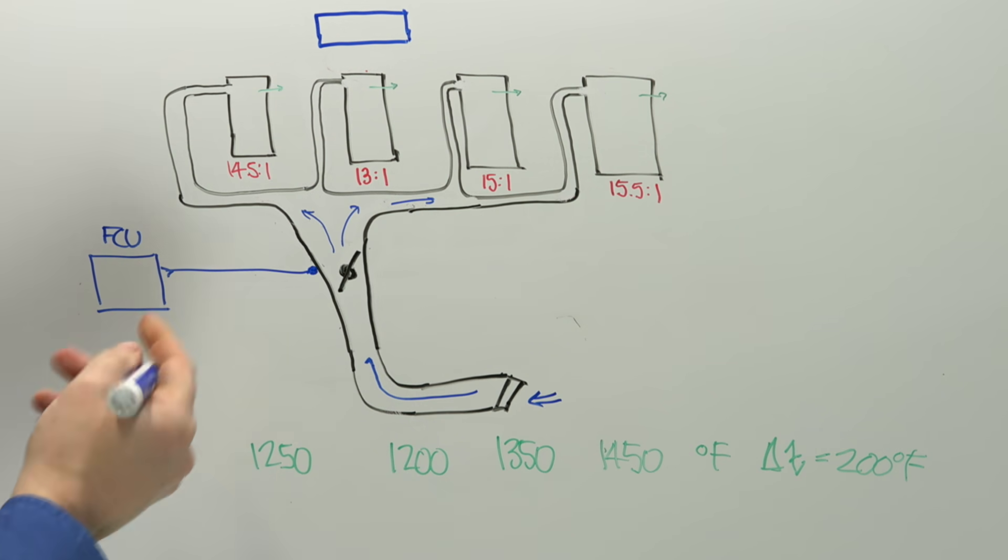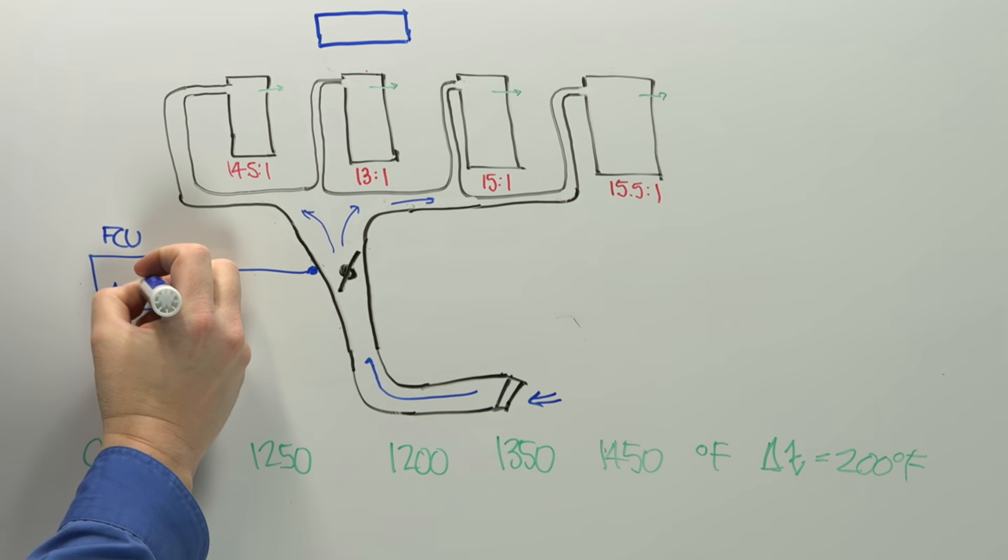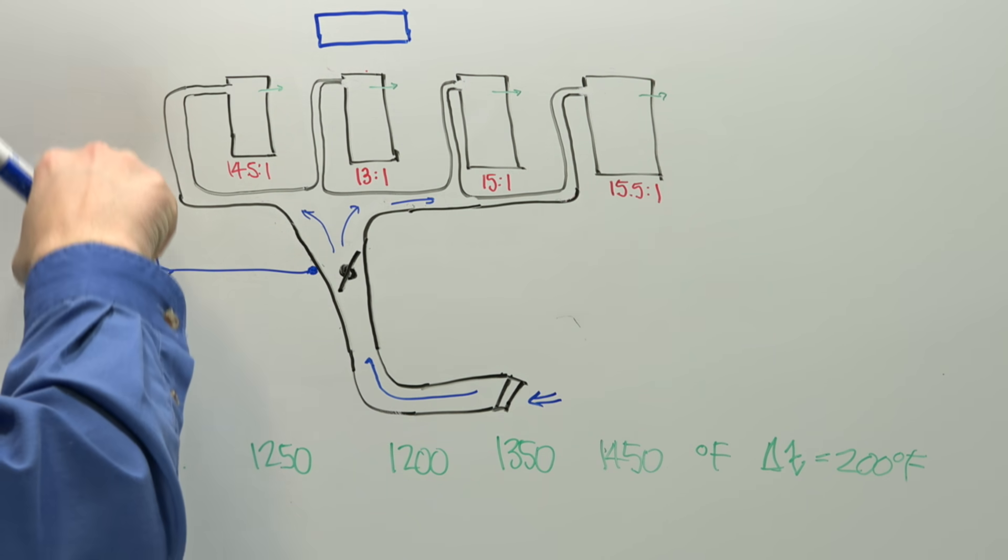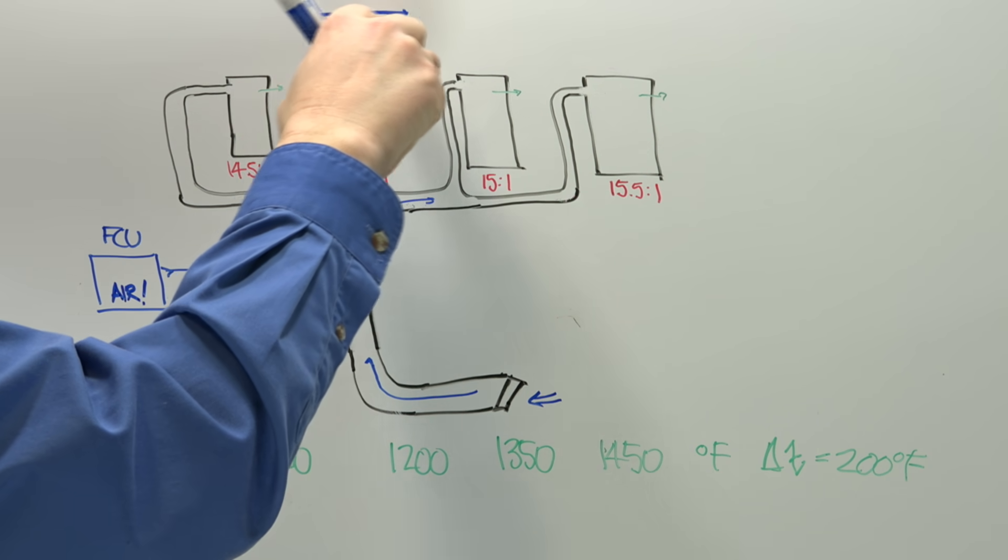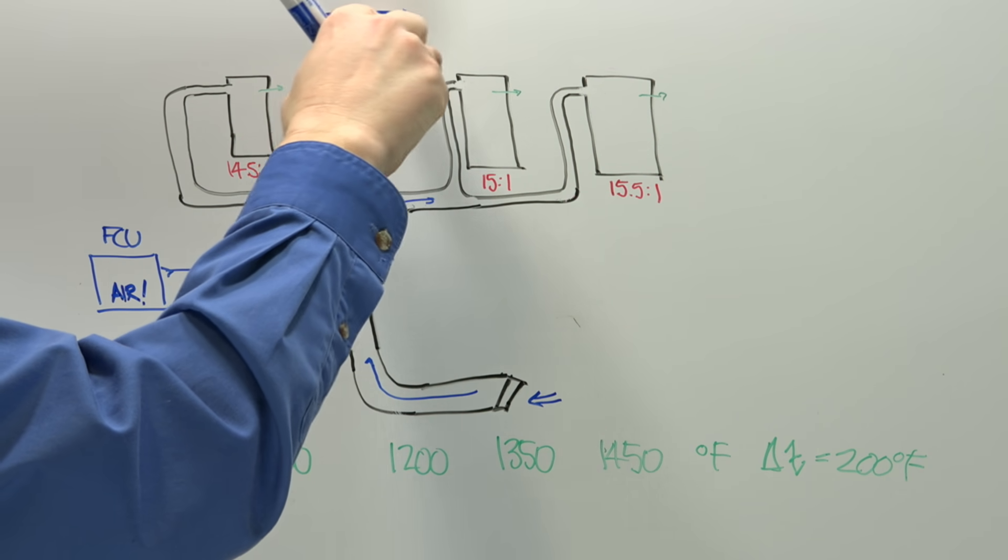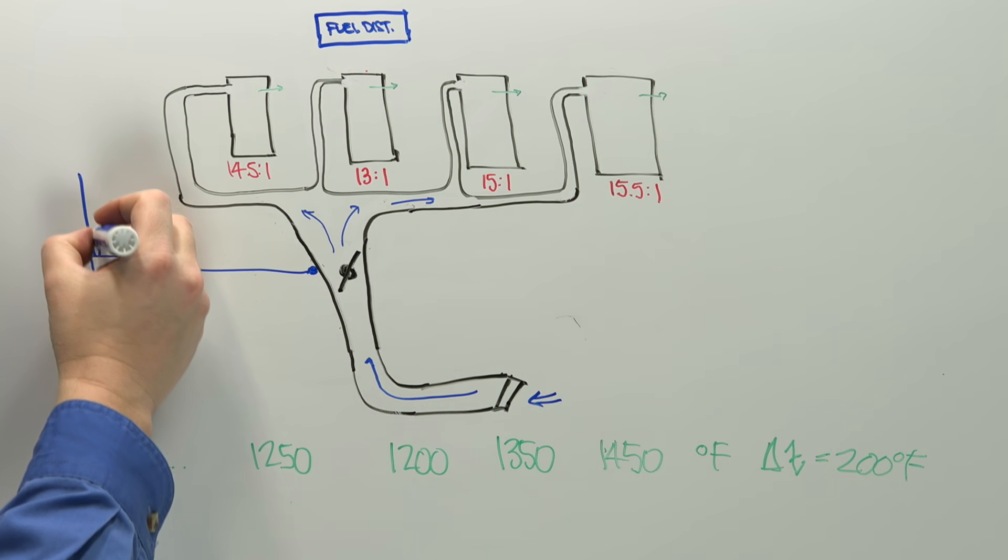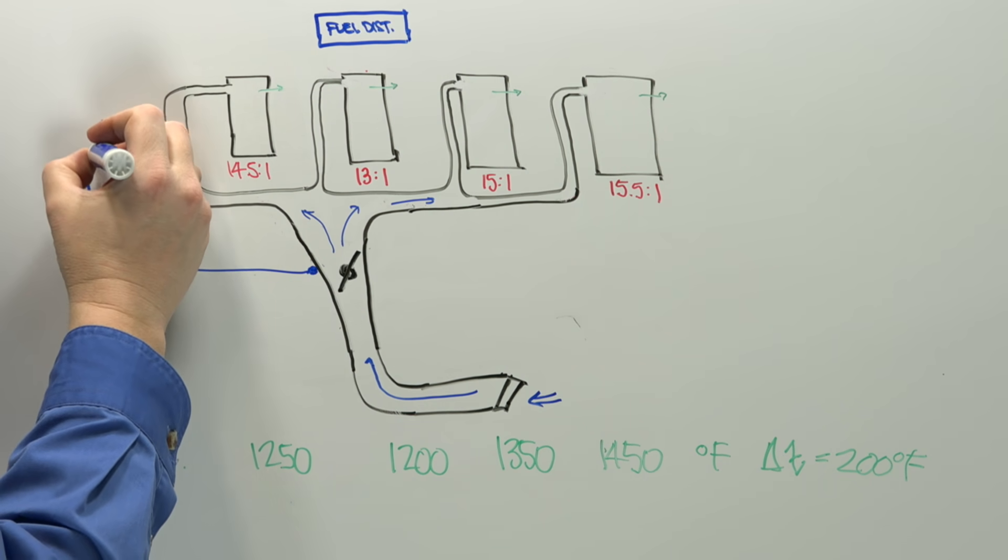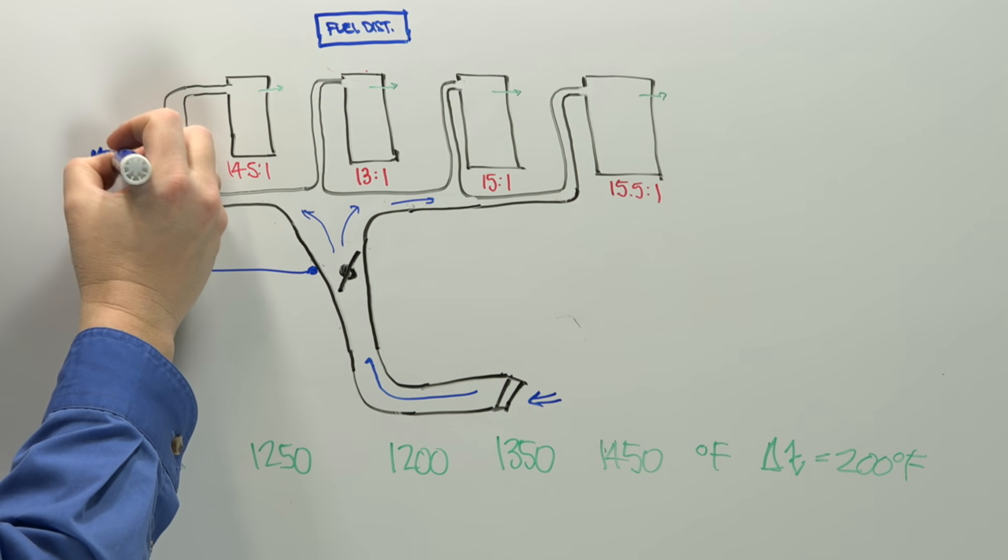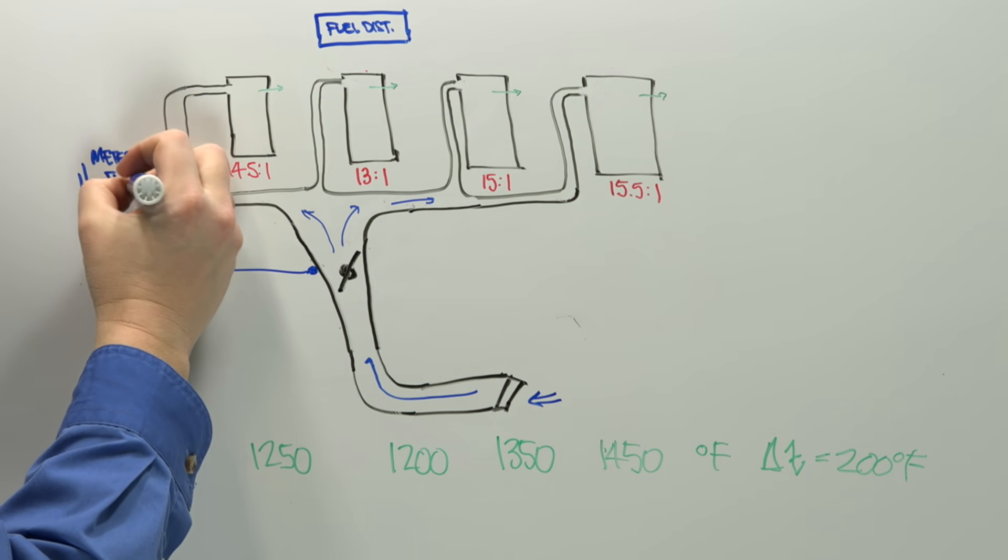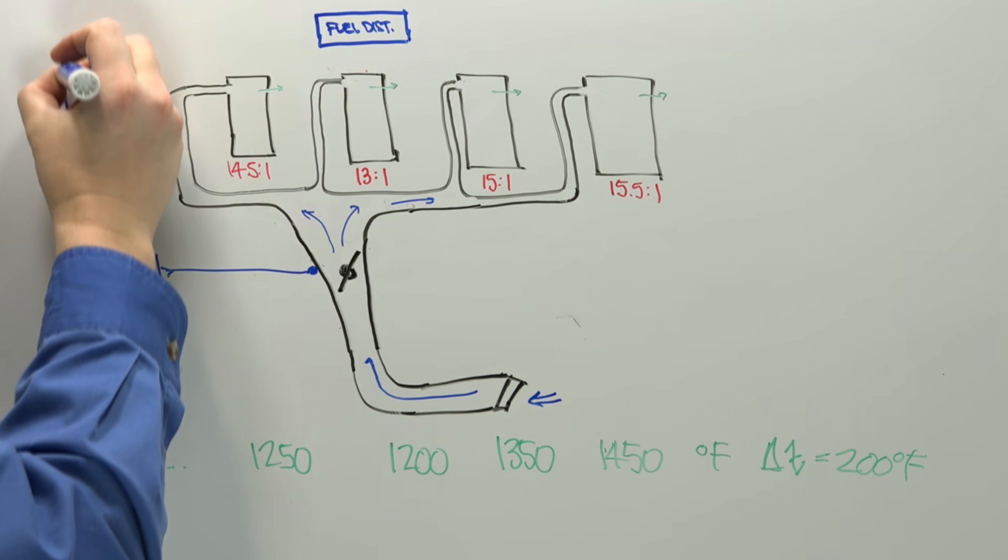And it says, okay, here's how much air we have heading towards the engine. It then sends a metered amount of fuel towards the distributor up here. So the fuel control unit is actually sending from the gas tanks a metered fuel amount to the fuel distributor.